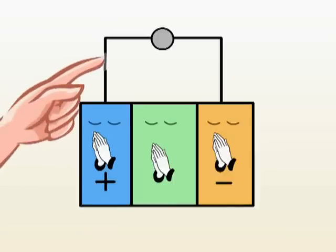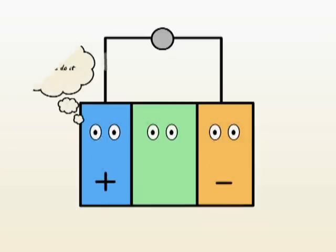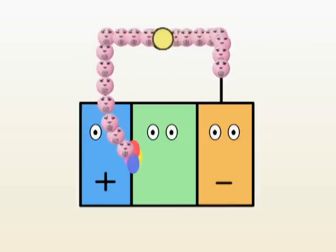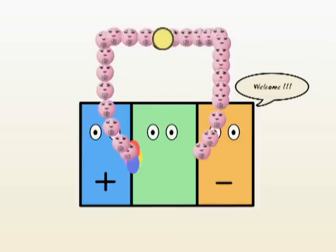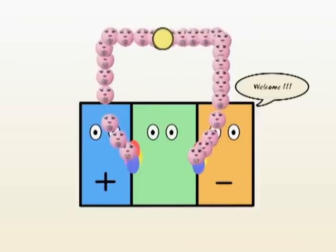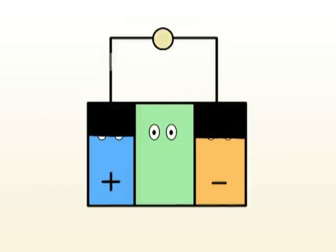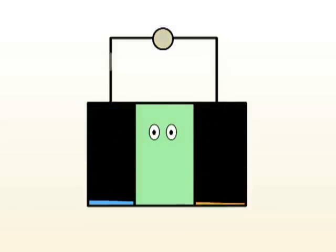The moment we close the circuit and create a path for electron flow, a chemical reaction takes place. Free electrons are generated at the positive terminal, which then flow through the closed circuit and land up at the negative terminal, which absorbs these free electrons. This current flow goes on and on until the terminals run out of the substances required for the chemical reaction.